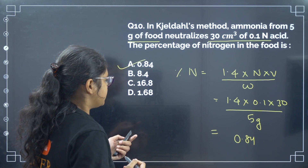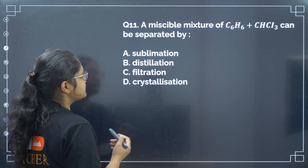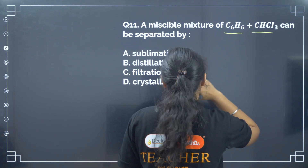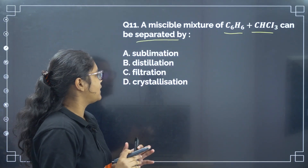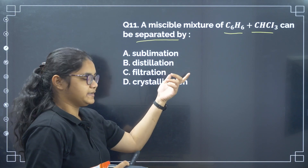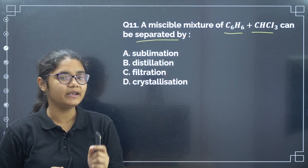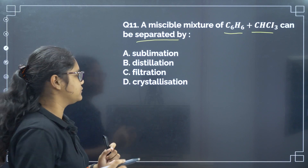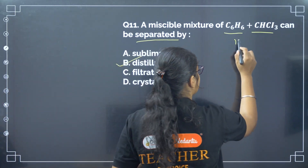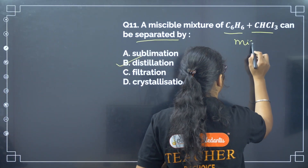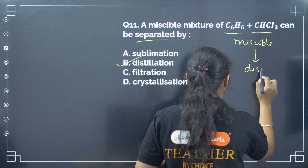Next: a miscible mixture of C6H6 and CHCl3 can be separated by? Miscible liquids can be separated by distillation method based on their boiling points. Correct answer is option number B. Remember: miscible liquids are separated by distillation.